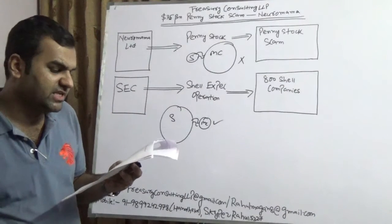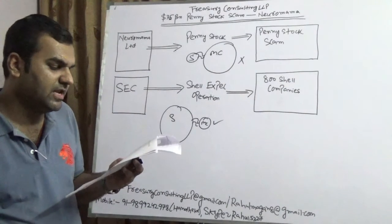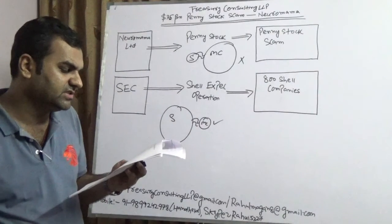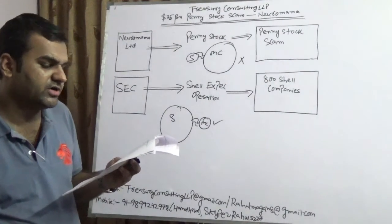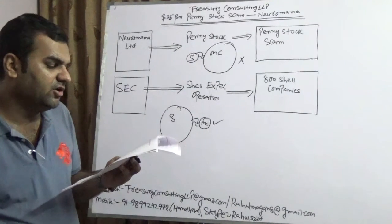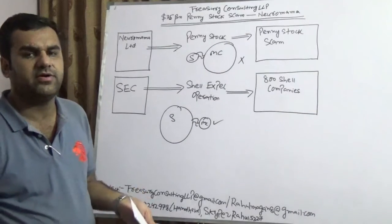And in this Shell Expel operation, more than 800 such companies over the last few years in an operation got identified. Several like Neuromama has reported little or no sales, yet are multi-billion dollar companies.